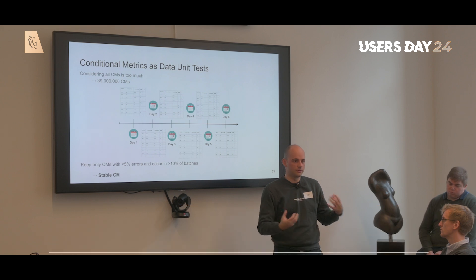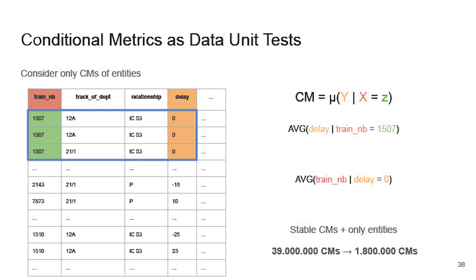We also only consider conditional metrics of entities. It makes sense to compute the average delay for a specific train, but computing the average train number for a random delay value makes little sense — delay is not really an entity, it's not tangible in the real world. Combining these two techniques, we reduce from 39 million to about 1.8 million conditional metrics — much more manageable, still a lot, but drastically reduced.